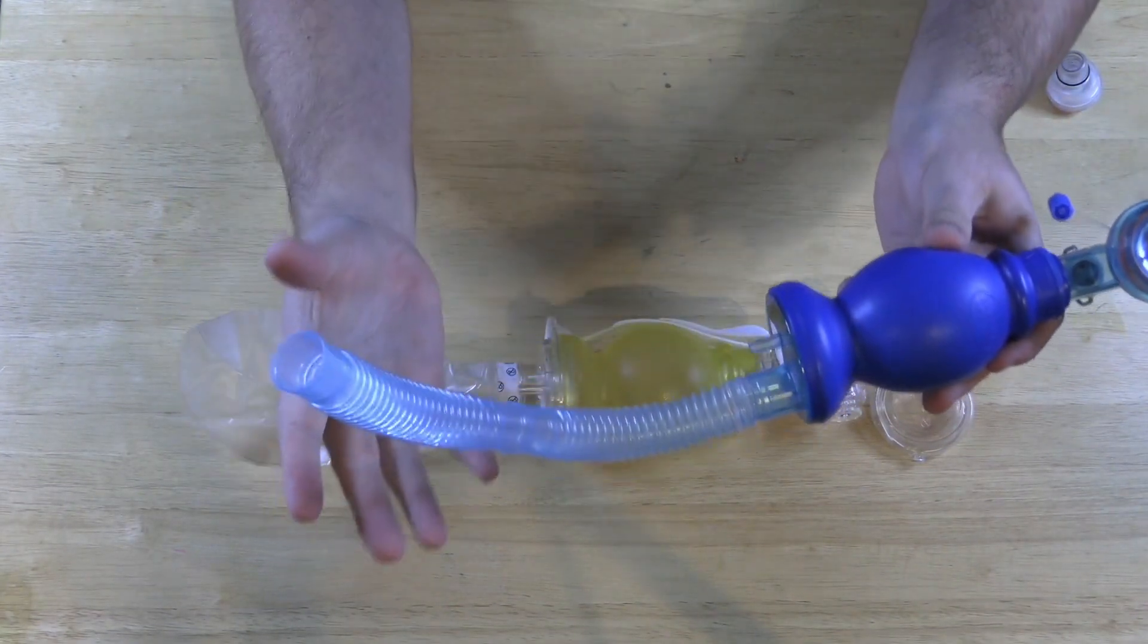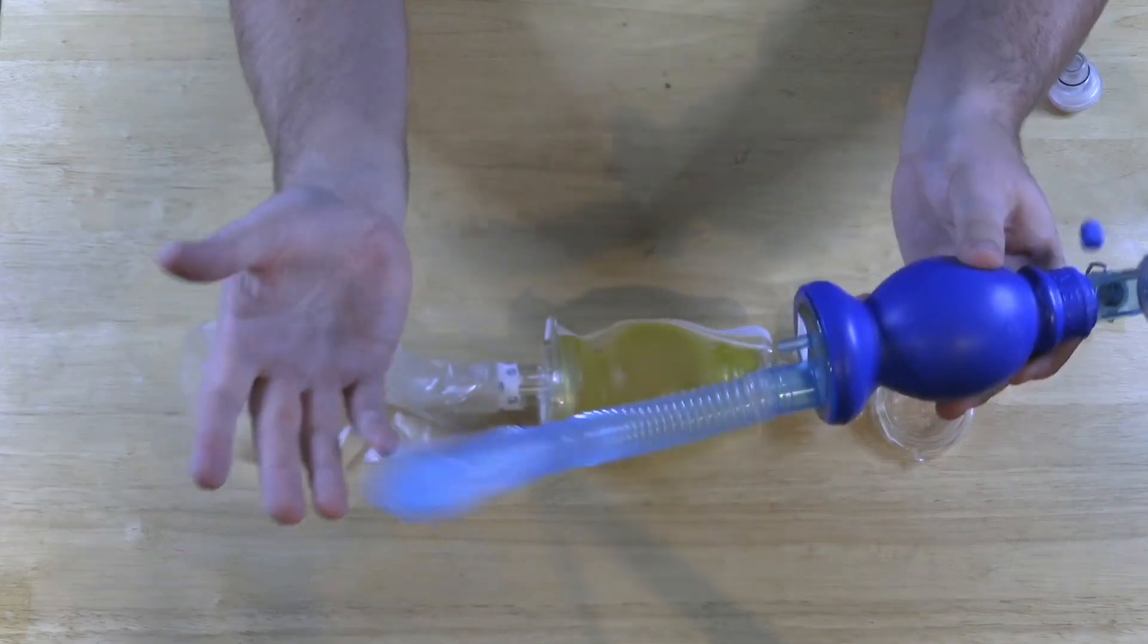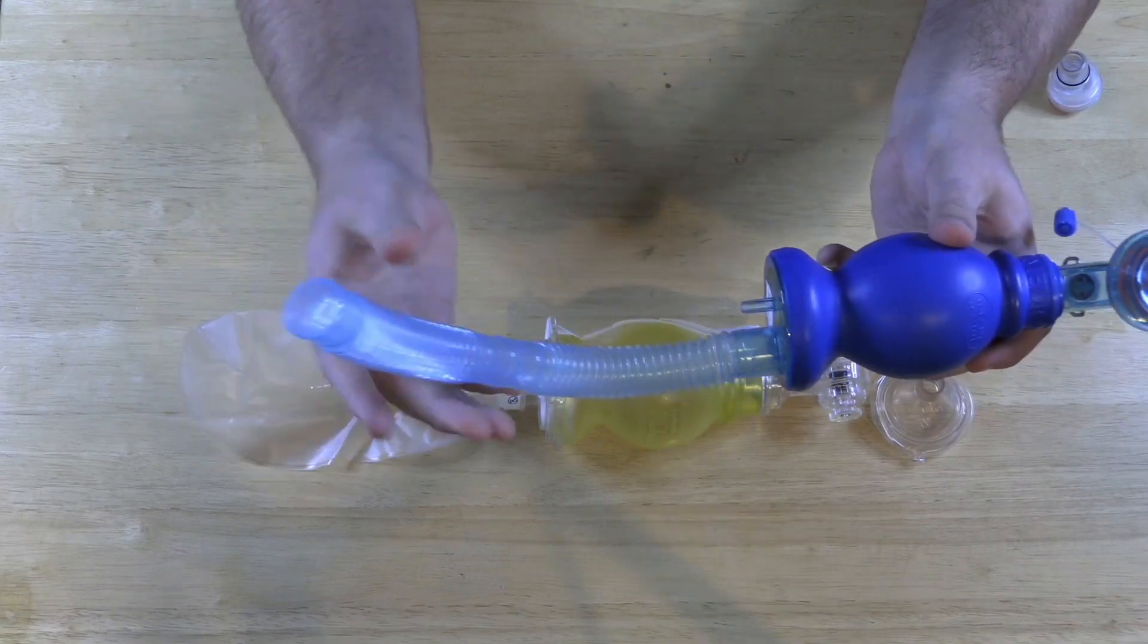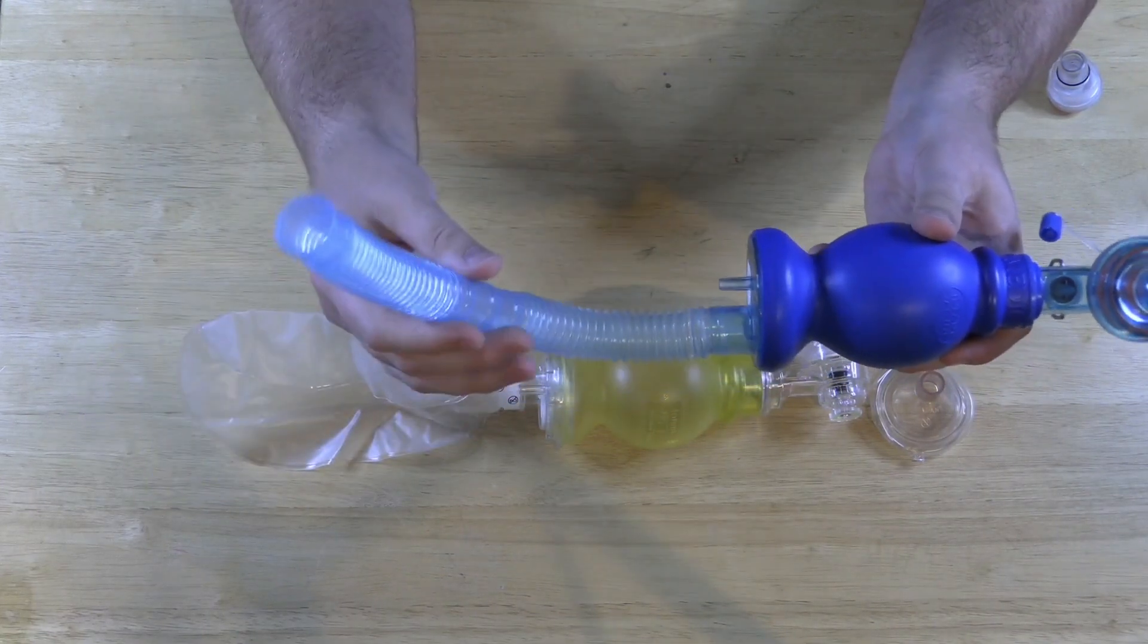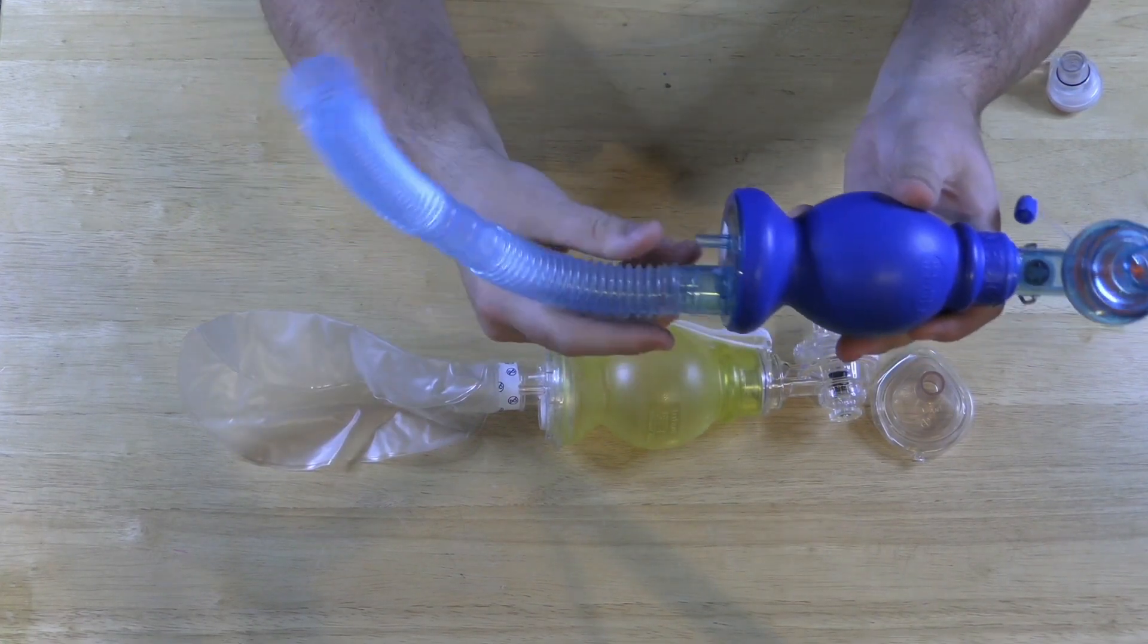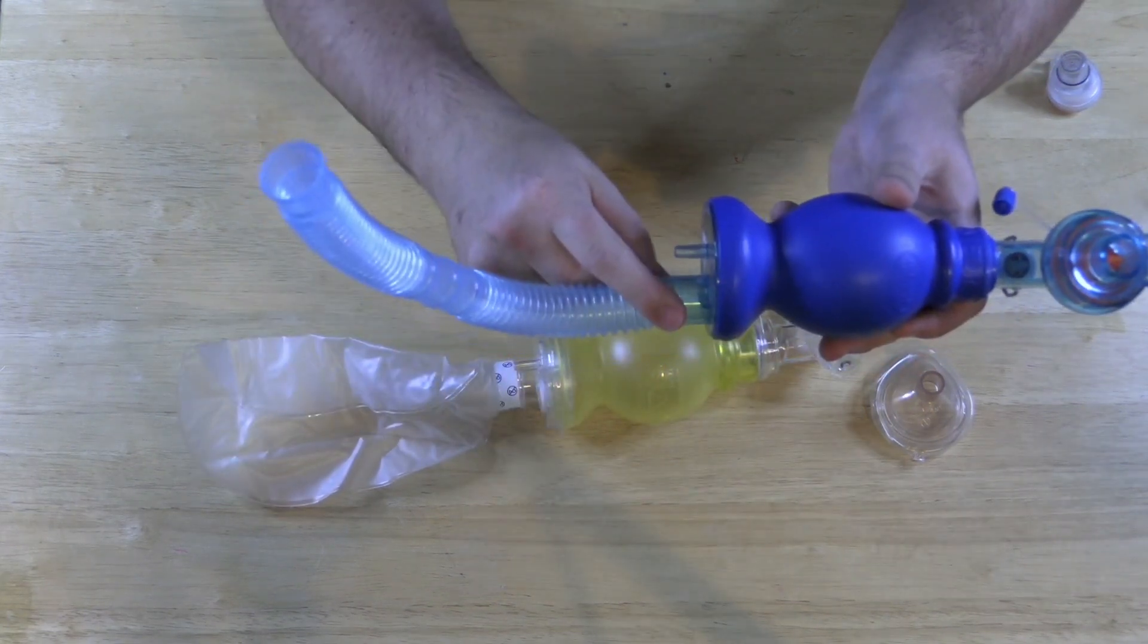In the middle of a resuscitation if I have some auditory exclusion, we know that's normally one of the first things to go is your hearing. When you're stressed out I'm not going to hear that regulator maybe, and I'm not going to have the visual cue either. So I would much rather have this off and then have the reservoir bag on here instead.